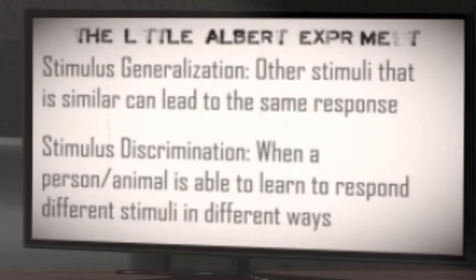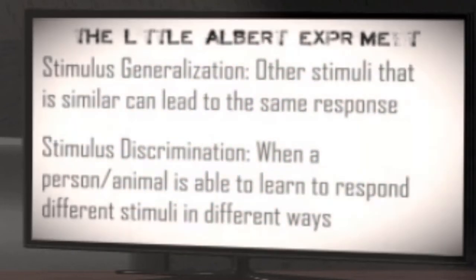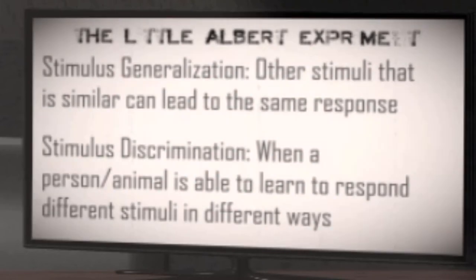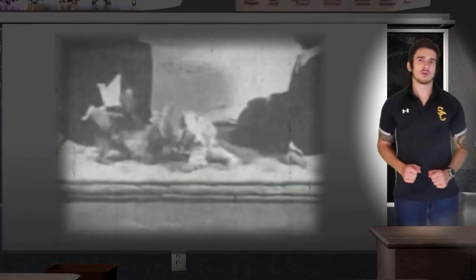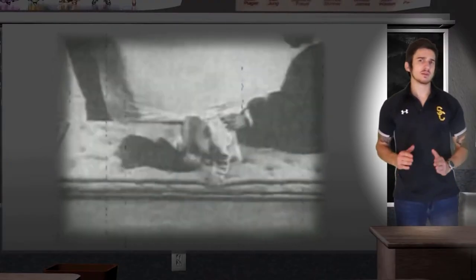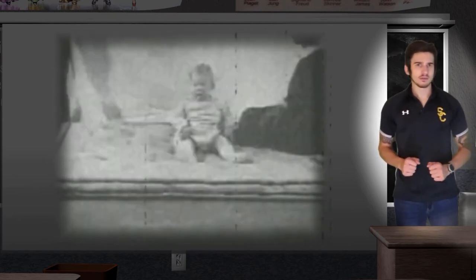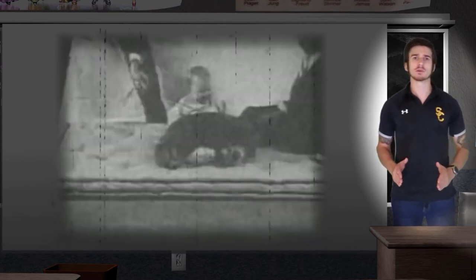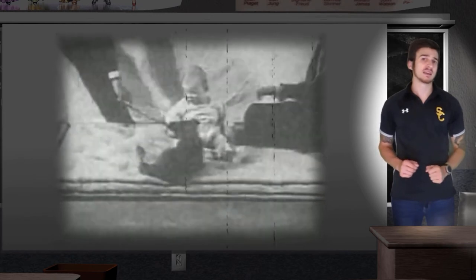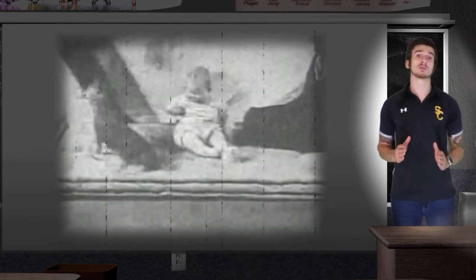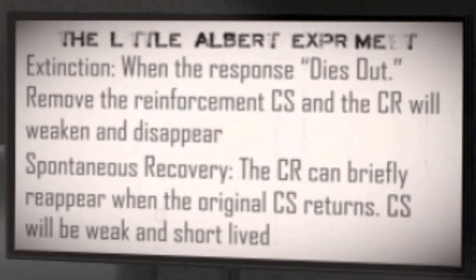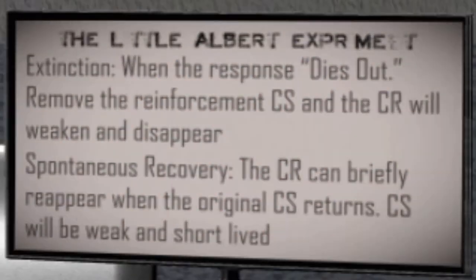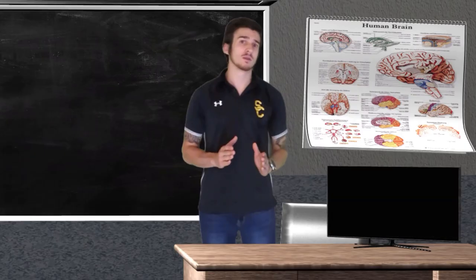So all white furry things would elicit a fear response in Albert. A question that often comes up with this study is, did Watson create a long-lasting fear response in Little Albert? Over the next few days, weeks, and even months, Little Albert would return to Watson to have follow-up experiments done. Watson found that after 10 days of initial conditioning, Albert's fear of rats dramatically decreased. This is the idea of extinction — in classical conditioning, a response dies out when the unconditioned stimulus is no longer present.